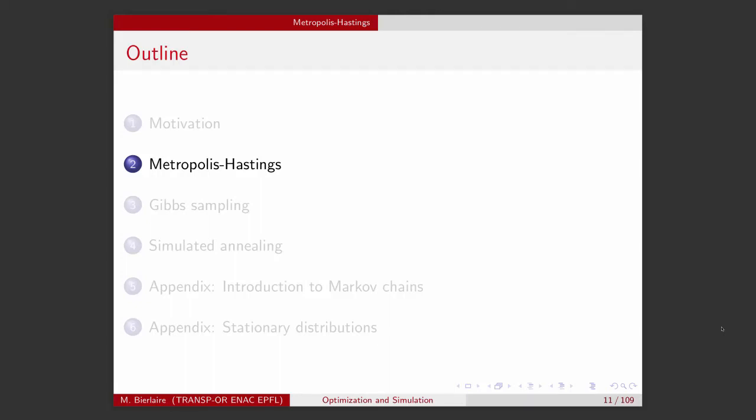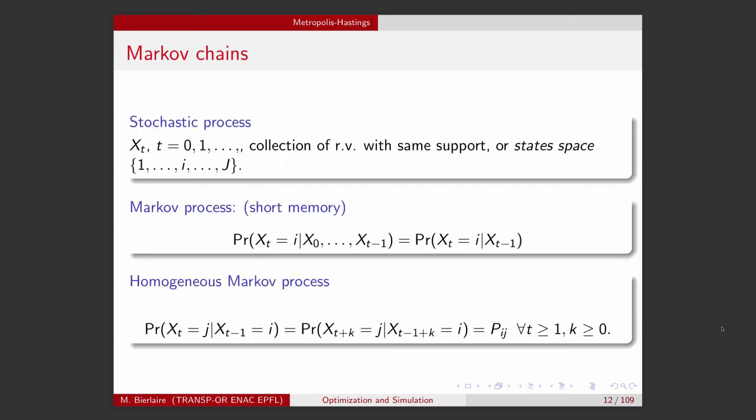The main Markov chain Monte Carlo method is called the Metropolis-Hastings algorithm, which we will see now. If you are not familiar with Markov chains, I urge you to go on the internet and get an introduction and a tutorial on Markov chains. But I will give you the essentials here that we will need for the Metropolis-Hastings algorithm.